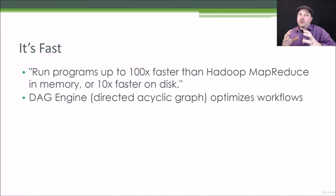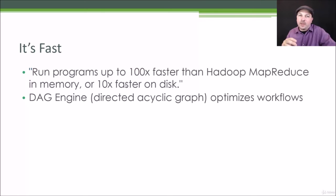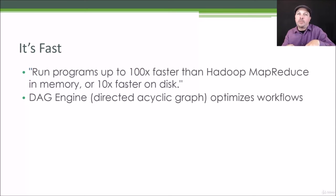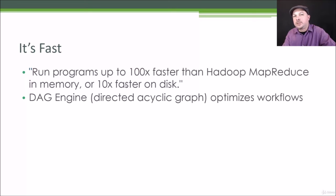What the DAG engine means is that you write a script describing how to process your data. You might have an RDD and do some transformation or action on it, but nothing actually happens until you perform an action on that data. At that point, Spark says: this is the end result you want — what are all the things I had to do to get here, and what's the optimal strategy? Under the hood, it figures out the best way to split up and distribute that processing. Spark waits until you tell it to actually produce a result, and only then does it figure out how to produce it. That's the key to a lot of its efficiency.